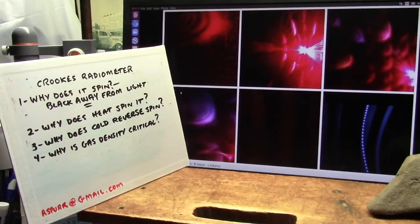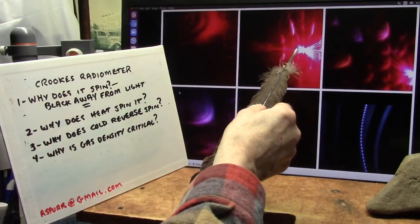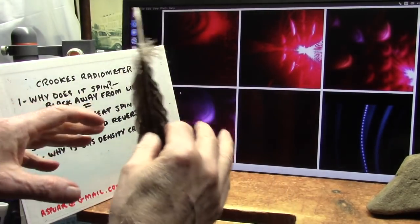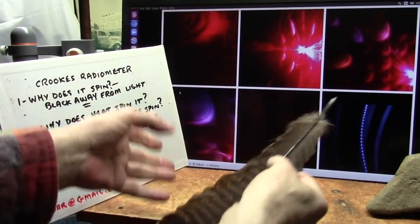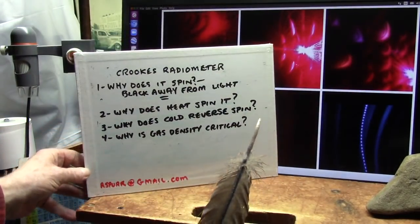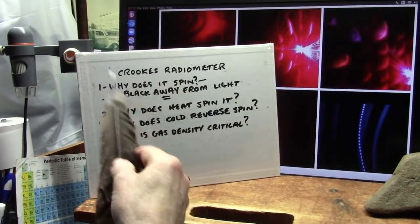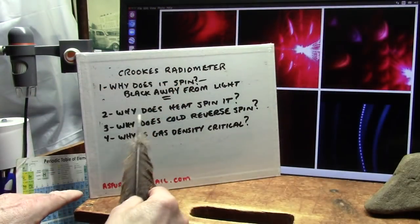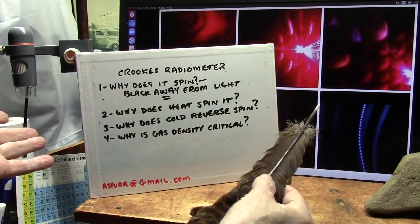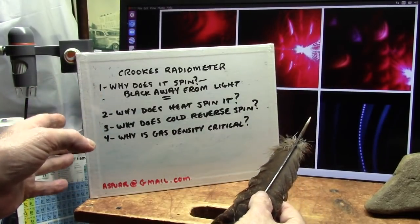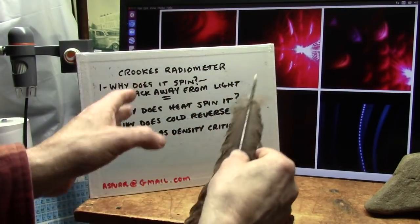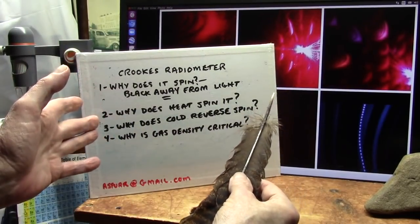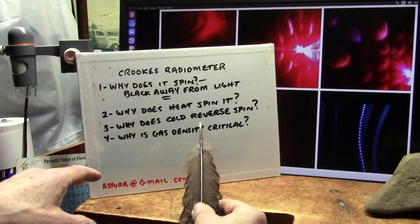So we know the Crookes radiometer reacts to light because light is heat, it has heat to it. It reacts to heat of your hand, it reacts to heat from hot water around it, and it reacts backwards to cold. This is the key, that's the real tricky one. Now why does it spin? The black spins away from light, so the light comes in, the black goes around. But why does heat spin? Why does heat do it? Light is not necessary, heat does exactly the same thing as light. So is light heat? Why does cold reverse spin? Is cold reverse light? Think about that.